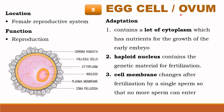Egg cell or ovum adaptation: the egg cell contains a lot of cytoplasm which has nutrients for the growth of the early embryo. It also has a haploid nucleus containing the genetic material for fertilization.